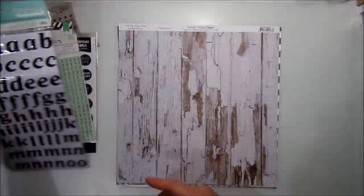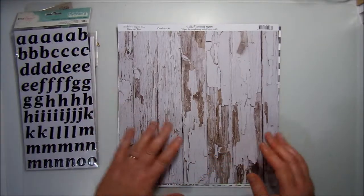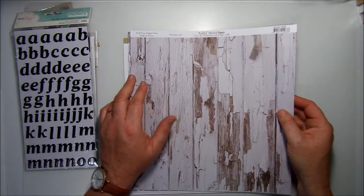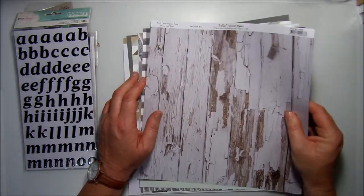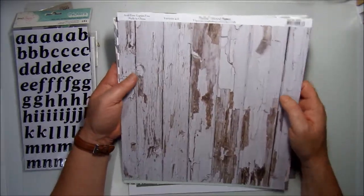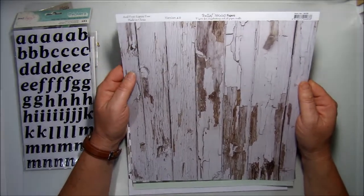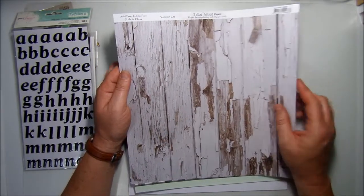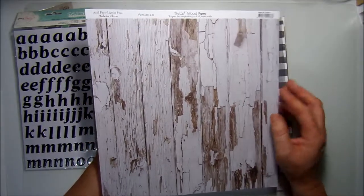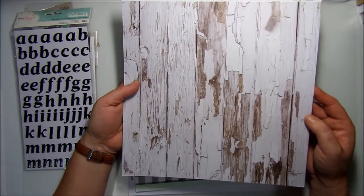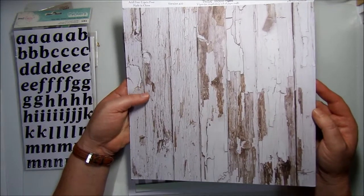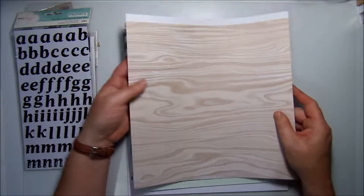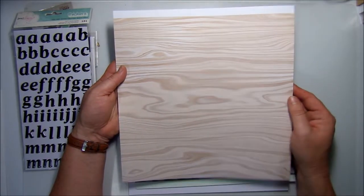Then we get to the pattern papers. There are six pattern papers in this kit that Bri's put together for us. We'll start off with our first sheet. We have a Bella woods paper, so obviously it has a wooden texture, bit of a shabby chic feel to it with the flaked off paint. And then on this side it has just the plain wood grain effect on it.